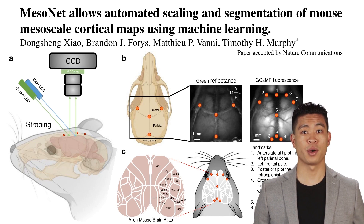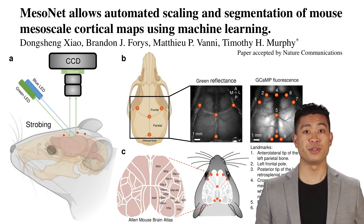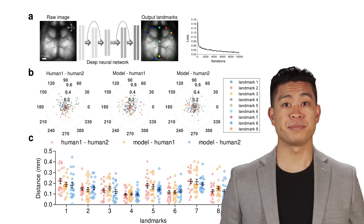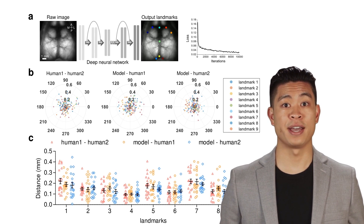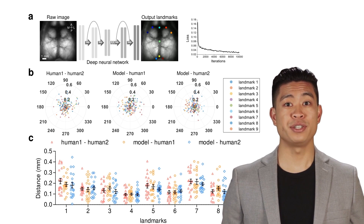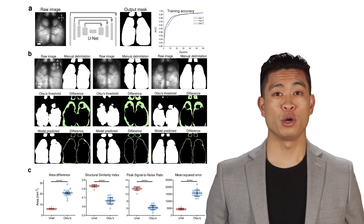We developed an automated machine learning-based registration and segmentation approach for quantitative analysis of mouse mesoscale cortical images. We first defined the landmarks in a common coordinate system for alignment to the reference atlas. In order to automatically estimate landmark locations, a dataset of images annotated with nine anatomical landmarks was used to train a deep learning model. The performance of landmark estimation is robust using deep learning compared to human raters.